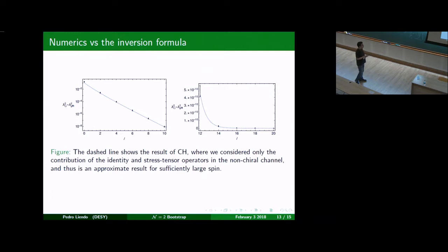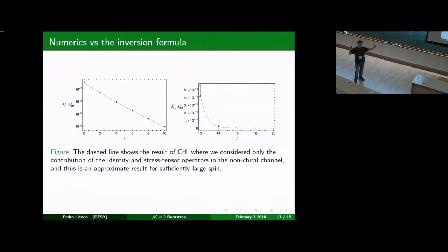These are the results. The numerical bounds are shown as two bars, and you can see the analytic result goes between the bars. Here they also agree very nicely. For spin 0, it doesn't work — we expected the dashed line to be valid only for large spins — but it's still quite remarkable that even for very low spins, both approaches are quite consistent. We are attacking the theory numerically for low spin and analytically for large spin, and both results are quite consistent. We can really claim we made the first step toward bootstrapping this theory and extracting its CFT data.